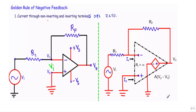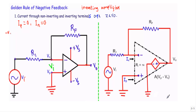The first rule: current through the inverting and non-inverting terminals are 0, meaning IP = 0 and IN = 0. To elaborate, I will use the inverting amplifier circuit configuration. The output terminal is connected with the inverting terminal through feedback resistor Rf, and input voltage is applied at the inverting terminal through series resistor R1. Since the output is connected to the inverting terminal via a passive element, the circuit is in negative feedback.